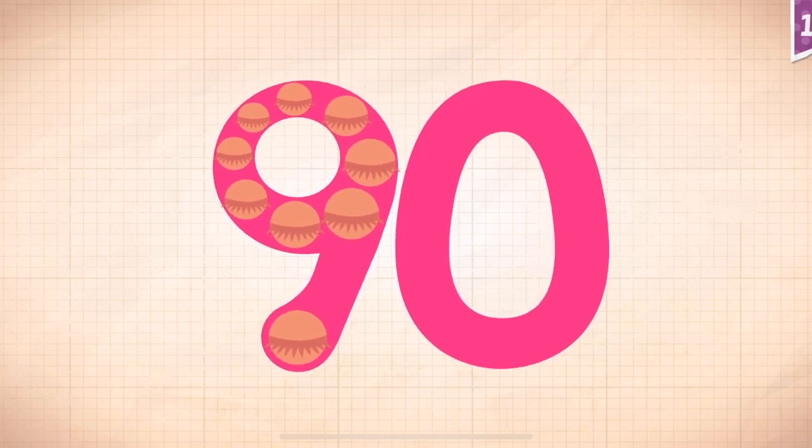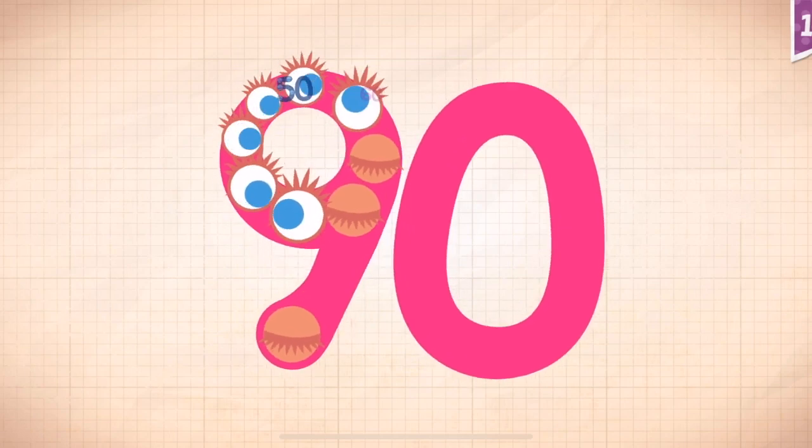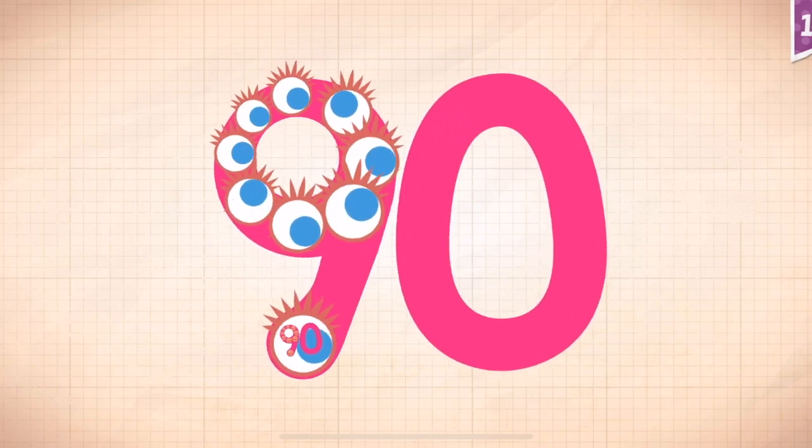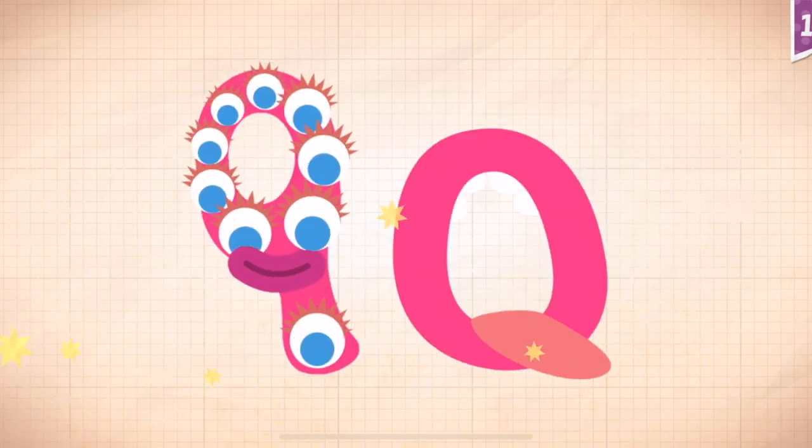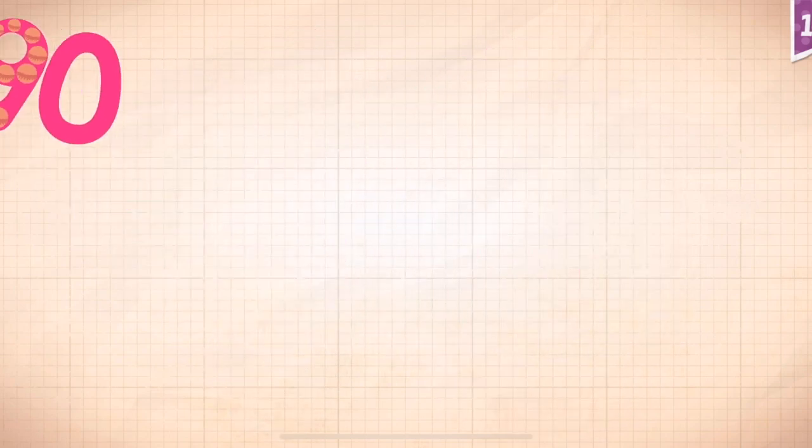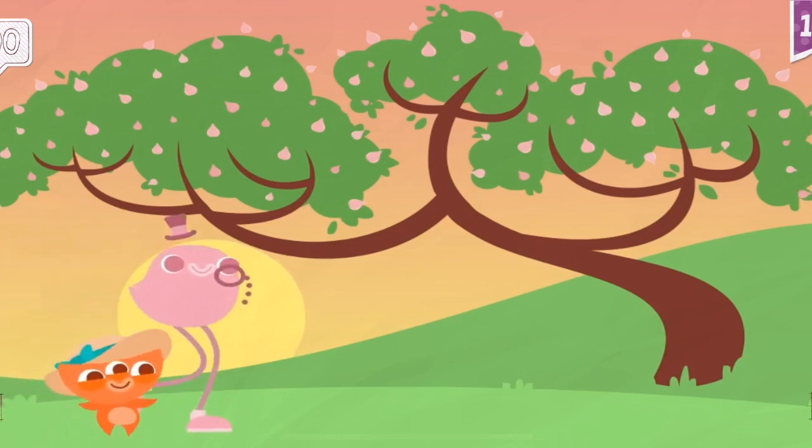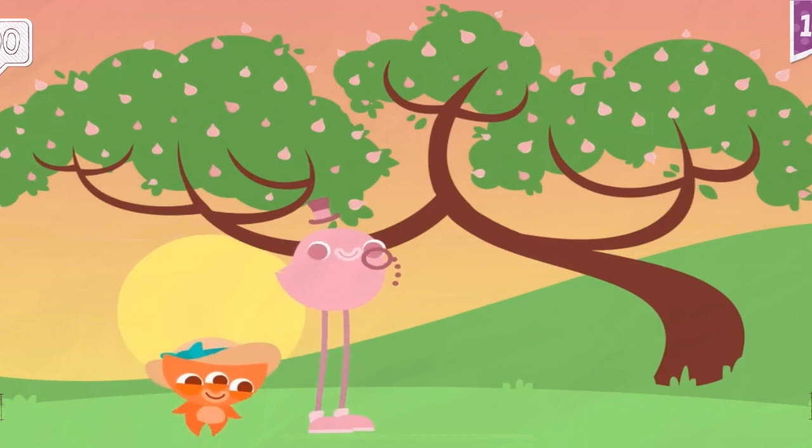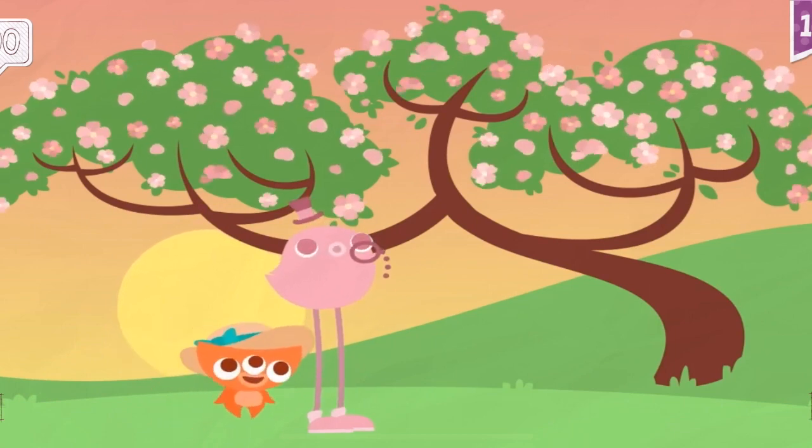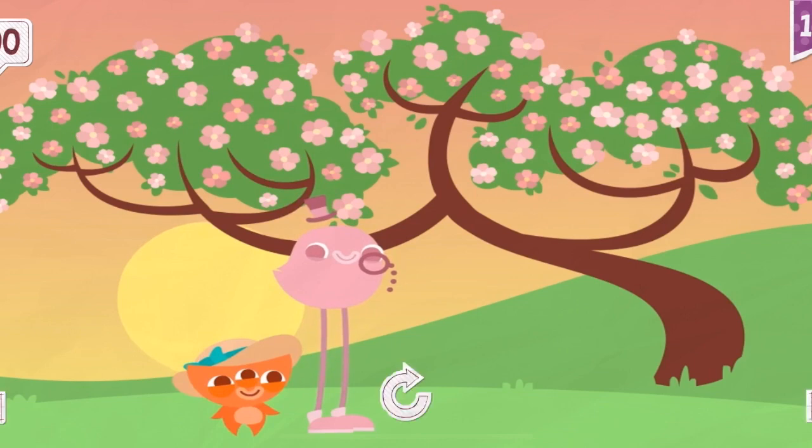Touch the monster's eyes to wake it up. 10, 20, 30, 40, 50, 60, 70, 80, 90. 90! 90 flowers bloomed on the beautiful tree in the park.